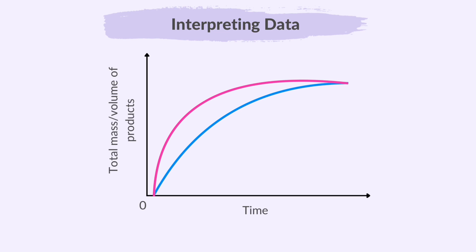Drawing lines on the graph helps us see how fast the reaction is going at different times. If we increase any of the factors affecting reaction rates, such as concentration or temperature, then the rate of reaction will be greater and the initial gradient will be steeper than the original reaction.